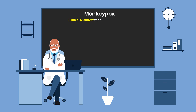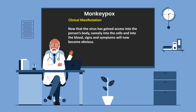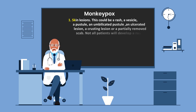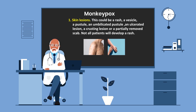The Clinical Manifestation: now that the virus has gained access into the person's body — into the cells and into the blood — signs and symptoms will become obvious. The symptoms usually start within 5 days of exposure. These include skin lesions: a rash, a vesicle, a pustule, an umbilicated pustule, an ulcerated lesion, a crusting lesion, or a partially removed scab.